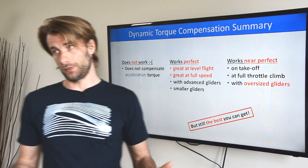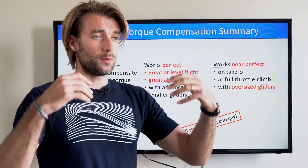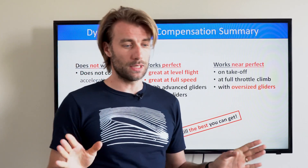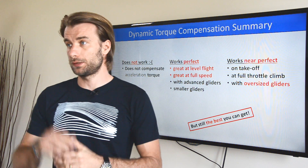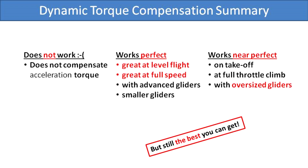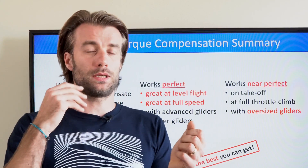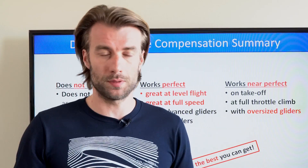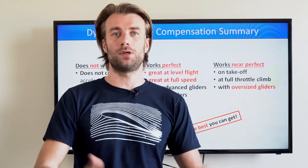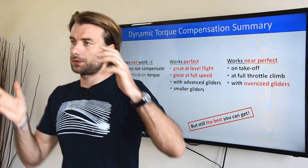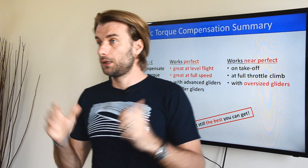It does not compensate acceleration torque. The acceleration torque is the glimpse — a fraction of a second when you accelerate the prop — the prop has not yet generated enough airflow for any compensation, so in that very short moment you are left uncompensated. It works perfect at level flight and really great at full speed bar flight. With advanced and smaller gliders, if you quickly add throttle, you face acceleration torque for a fraction of a second. It will pitch you slightly to the side, but as soon as the prop reaches RPM and generates airflow, the windmill brings you back to neutral.